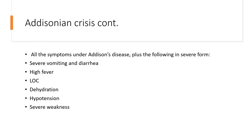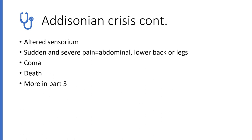In Addisonian Crisis there will be severe vomiting and severe diarrhea, which will lead to hypovolemic shock with hypotension. There will be high fever, loss of consciousness, dehydration, and severe weakness. There will be altered sensorium. It is going to be sudden — sudden and severe pain limited to the abdominal region, lower back, or even radiating to the legs. The individual could go into a coma and could actually die if there is no immediate intervention. I will tell you more about Addisonian Crisis in part 3.